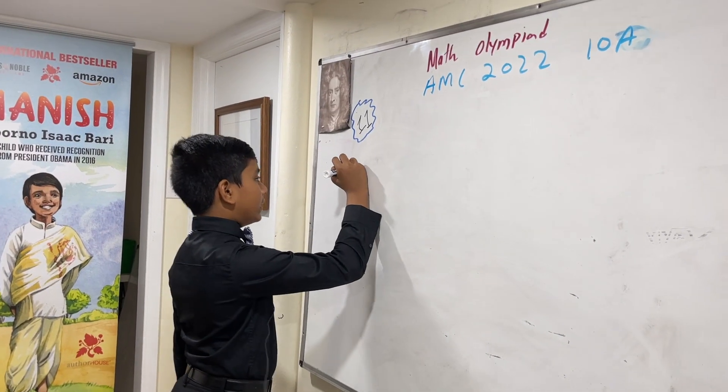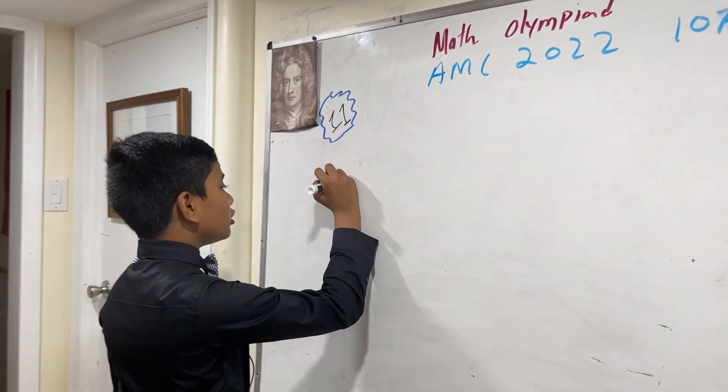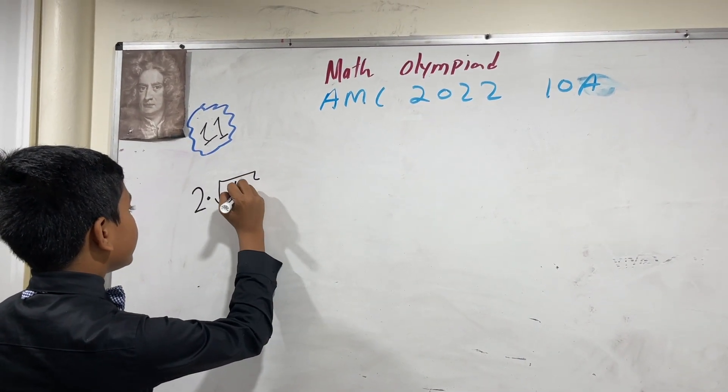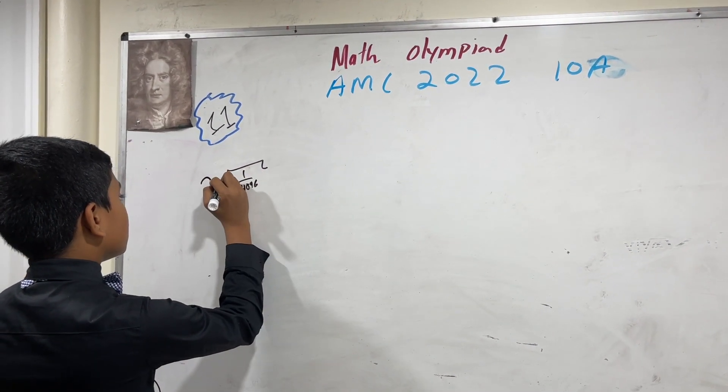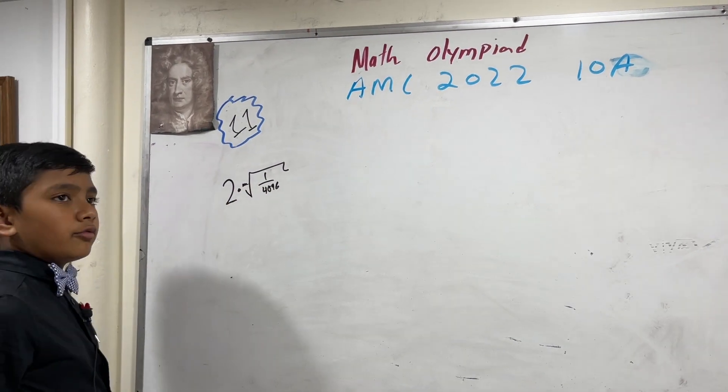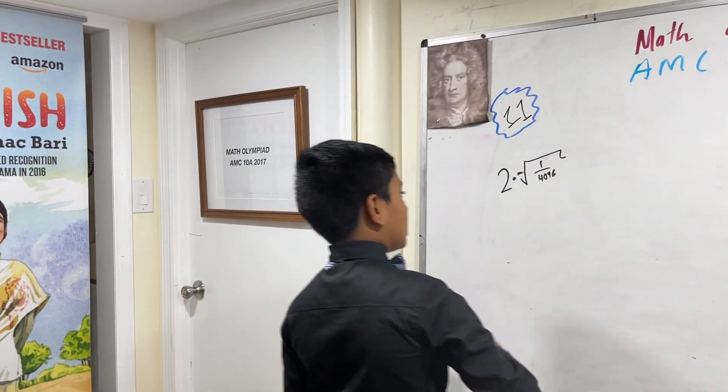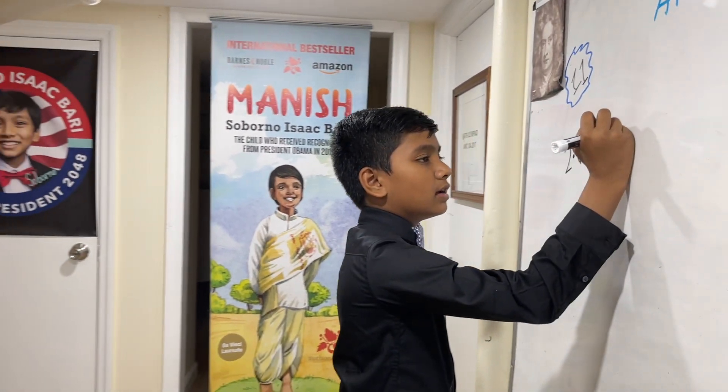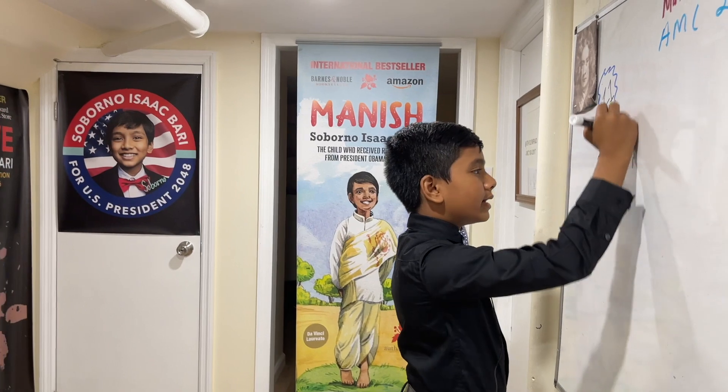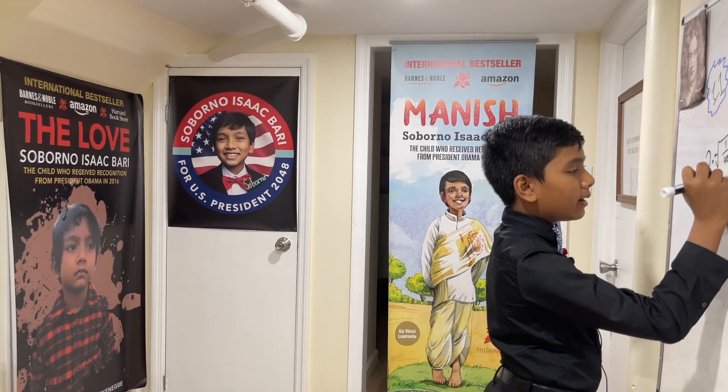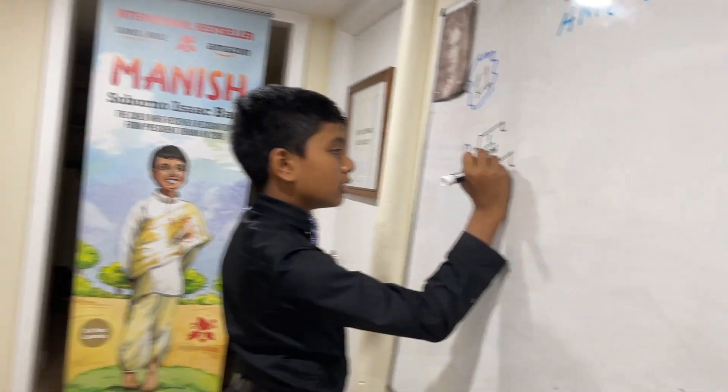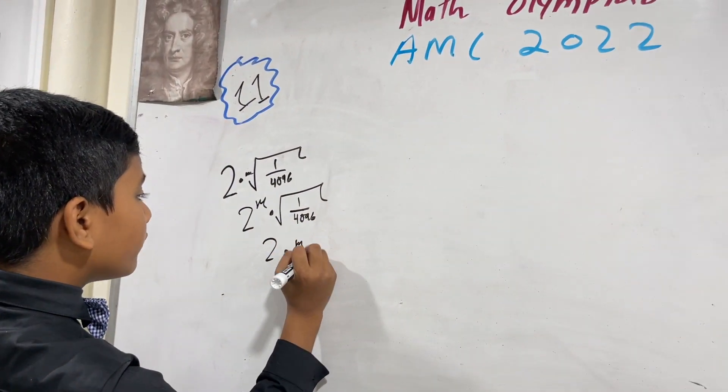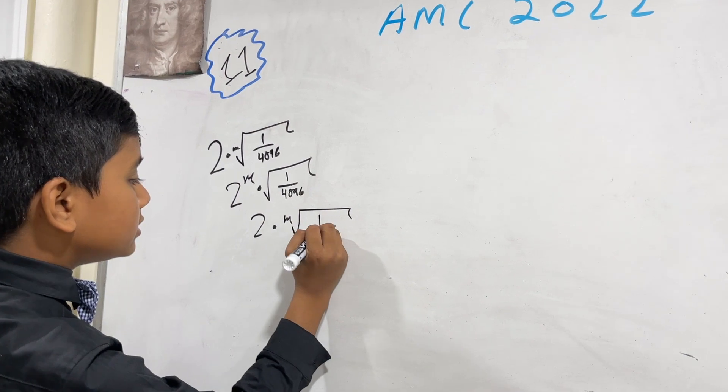Ted is writing the expression 2 times the mth root of 1 over 4096. I know how to say that. But he mistakenly writes it as 2 to the m times the square root of 1 over 4096. What is the sum of all values of m for which these two are equal?